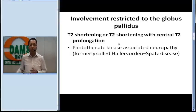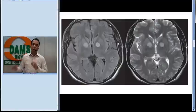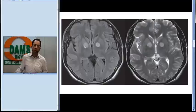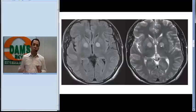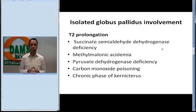This appearance is classically called the 'eye of the tiger' sign. Looking at the next image showing FLAIR and T2-weighted axial images, you can see hyperintense signal in the globus pallidus on both T2-weighted and FLAIR images. Whenever we see such an appearance, the differential diagnosis includes metabolic diseases like succinate semialdehyde dehydrogenase deficiency, methylmalonic acidemia, pyruvate dehydrogenase deficiency, carbon monoxide poisoning, and the chronic phase of kernicterus.